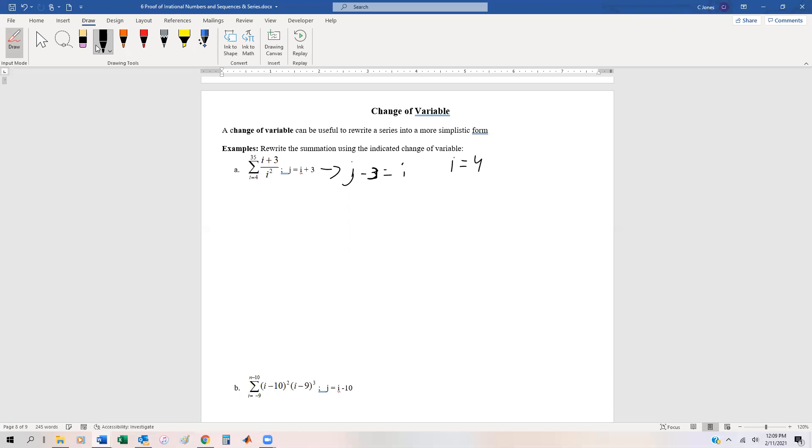Since i equals 4 and i equals 35 for the lower and upper bounds, but we know that j is equal to i plus three, that means j equals 4 plus 3, which is 7 for the lower bound. And j is going to equal 35 plus 3 for the upper bound. So our new series is going to be j equals 7 to 38. And we're going to substitute j minus three back in for i. So we get j minus three plus three and then j minus three squared.